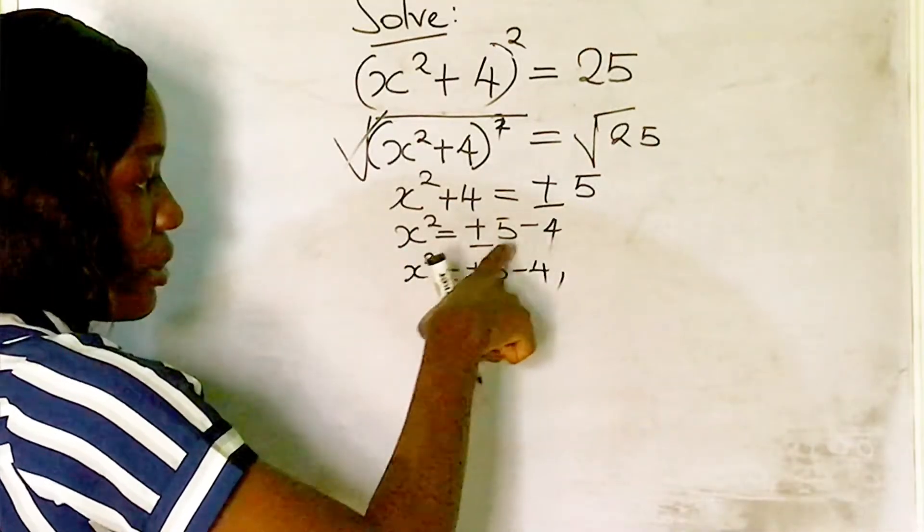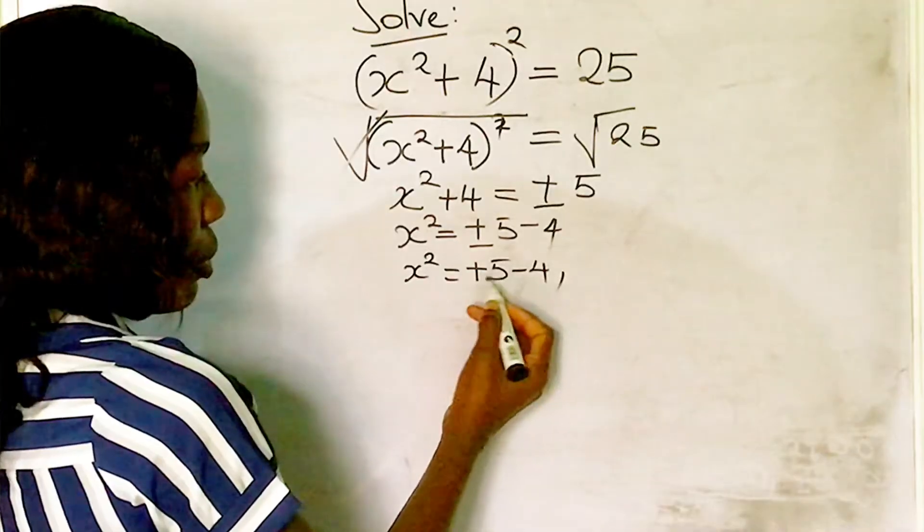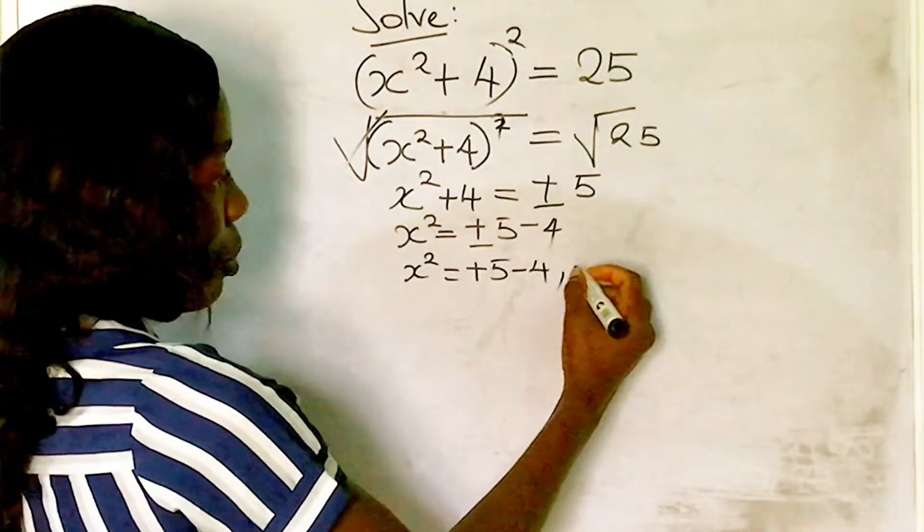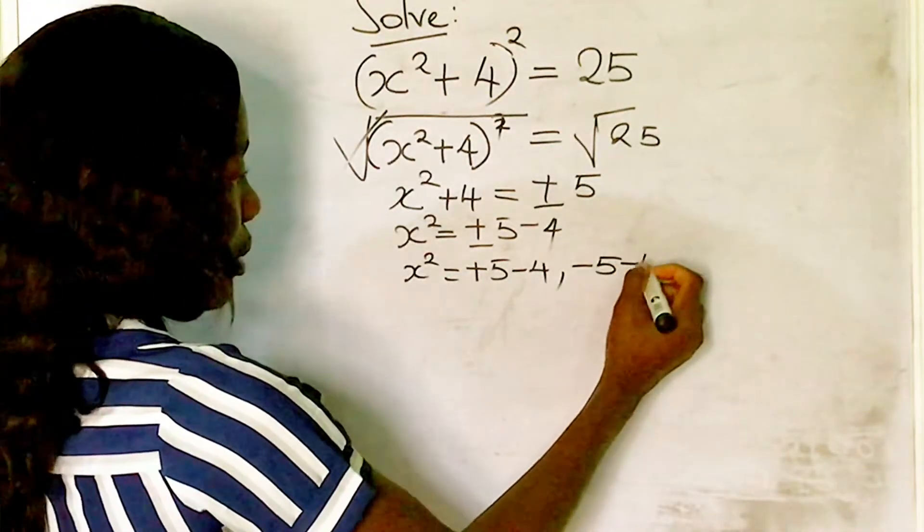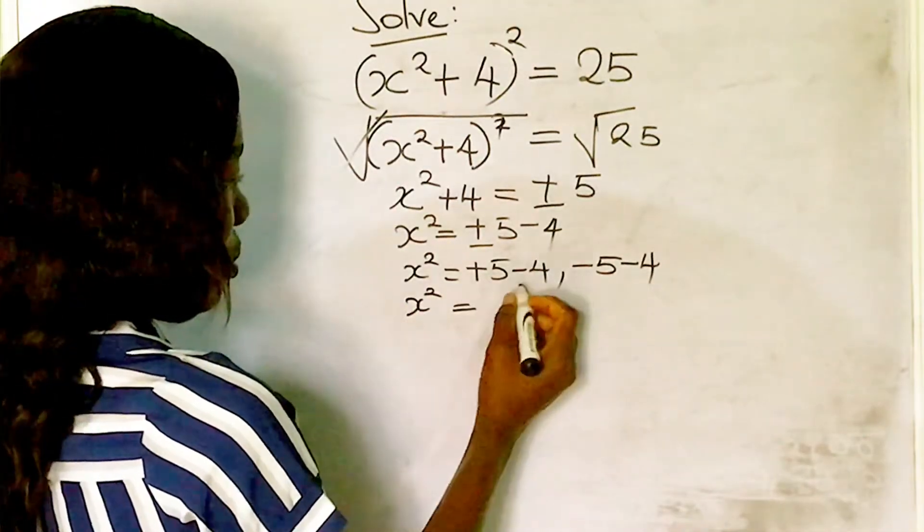We have ±5, so we solve for two equations: +5 - 4 or -5 - 4. We have x² = 5 - 4 = 1, or x² = -5 - 4...